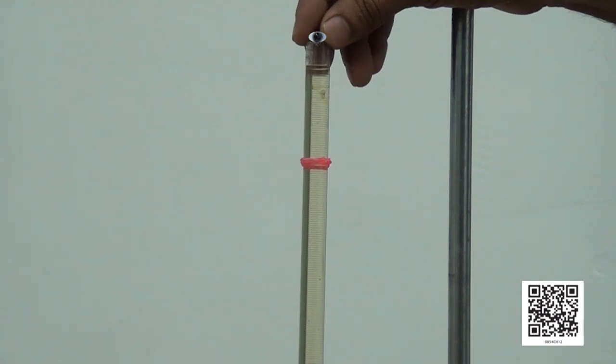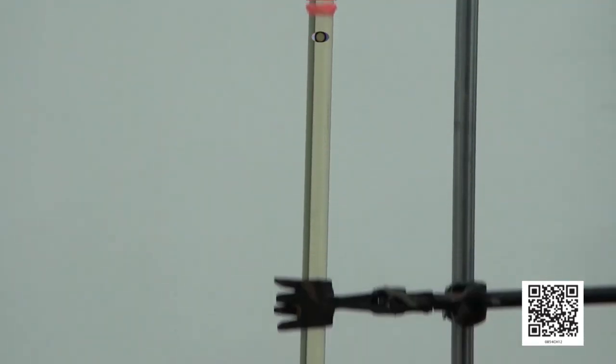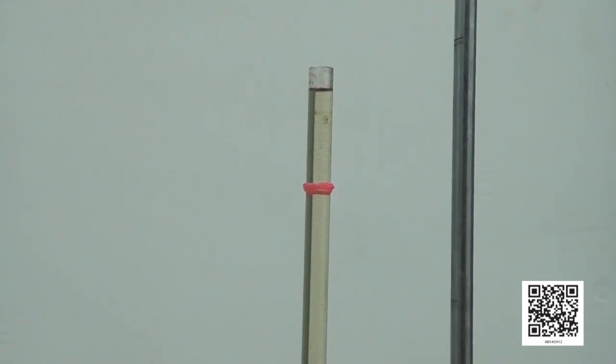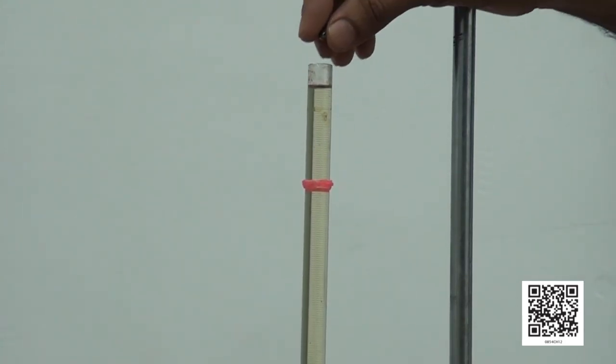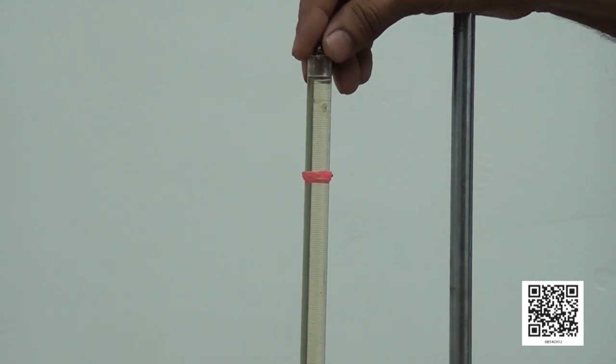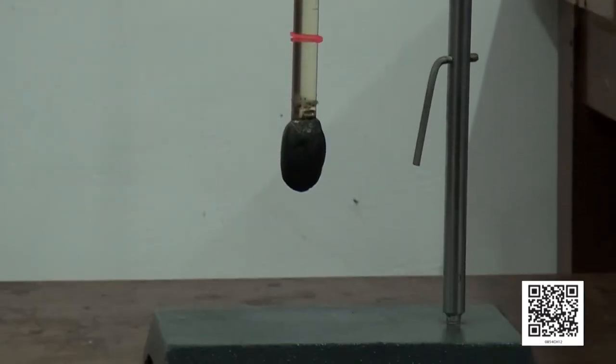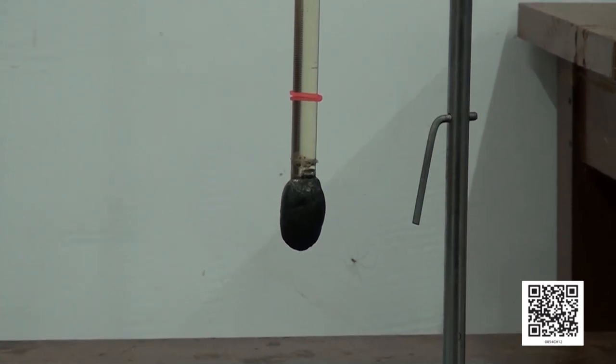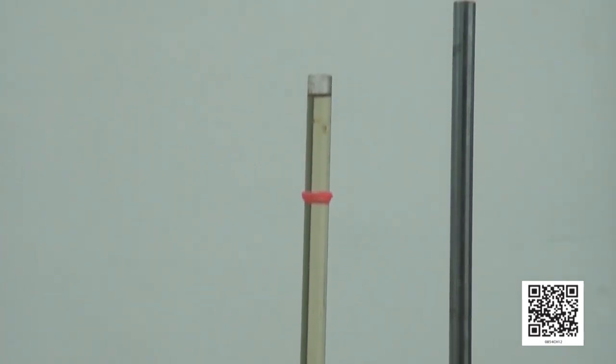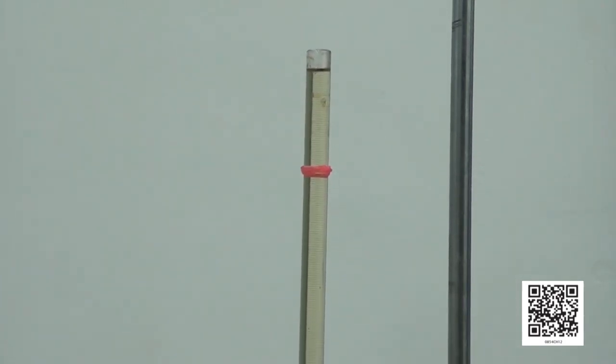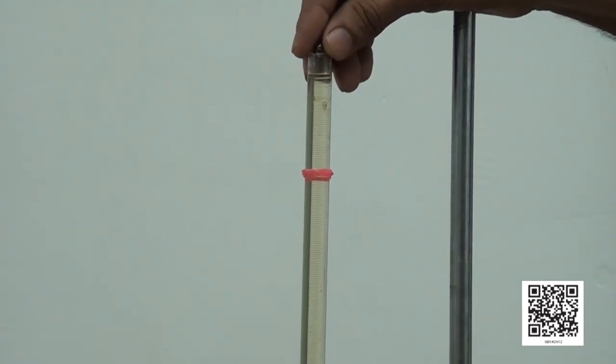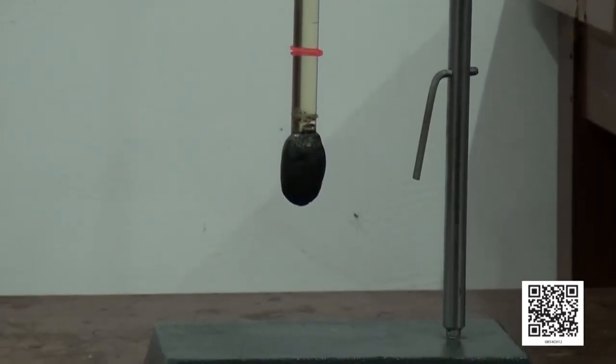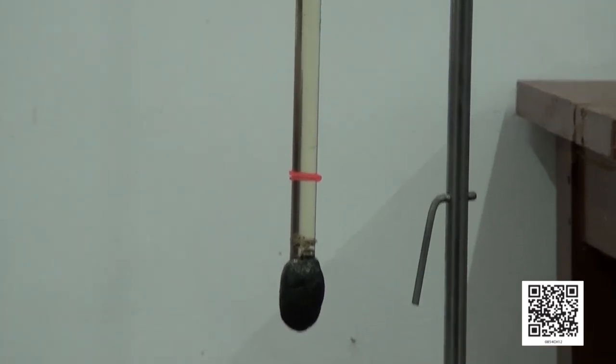Now, suppose I change the shape of this metal ball and make it more flat. Remember, I am changing its shape only, not the mass. What does it mean? It means that the gravitational pull of the earth remains the same. Then, if I drop this flattened object in the oil, what would happen to the time to travel the same distance? Our daily life experience tells us that the time taken will be more in this case compared to the case of the metal ball. So, what do you understand from this? Yes, the frictional force would be more in this case. That is, the fluid friction depends upon the shape of the object moving in the fluid also. So, another factor that affects the fluid friction is the shape of the object. I hope these things are clear to you.